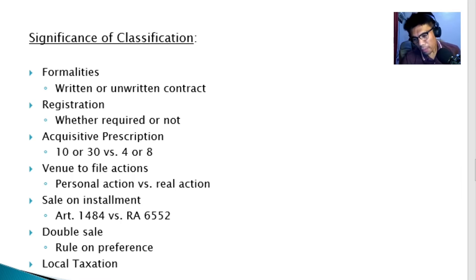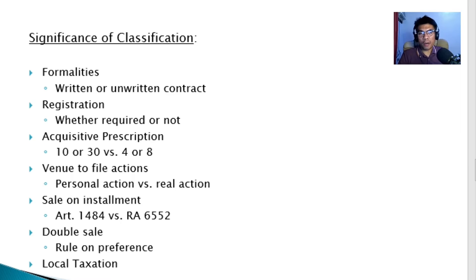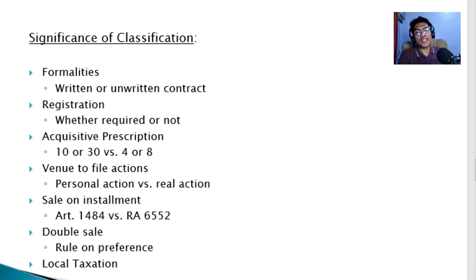Second, registration — only real properties are covered by the Torrens system and must be registered. Any voluntary or involuntary dealing with immovable properties must be recorded in the registry of property. Note: the Registry of Deeds also records chattel mortgages, and with the Personal Property Security Act (PPSA), other personal property securities are also registered. The PPSA is included in the bar exam, so study it.